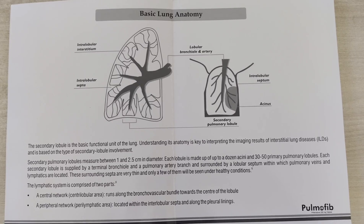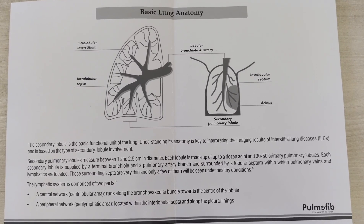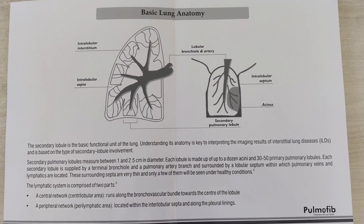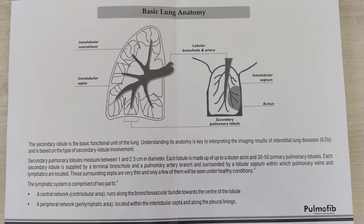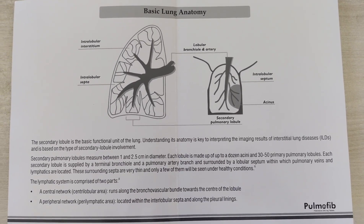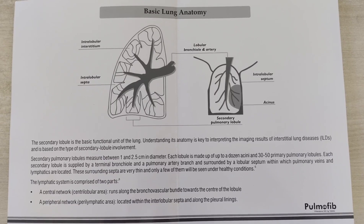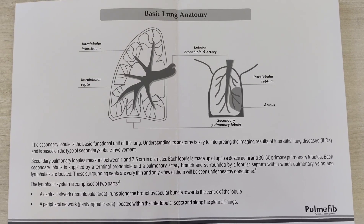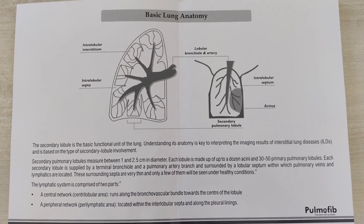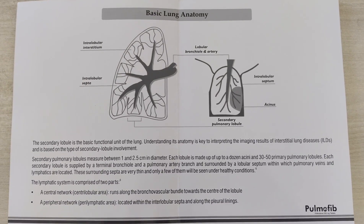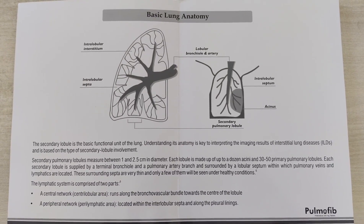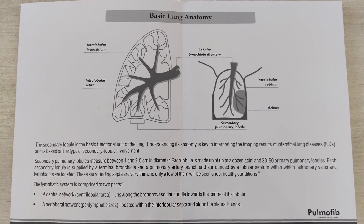The secondary pulmonary lobule measures between 1 to 2.5 cm in diameter. Each secondary pulmonary lobule is made up of up to a dozen acini and 30 to 35 primary pulmonary lobules.